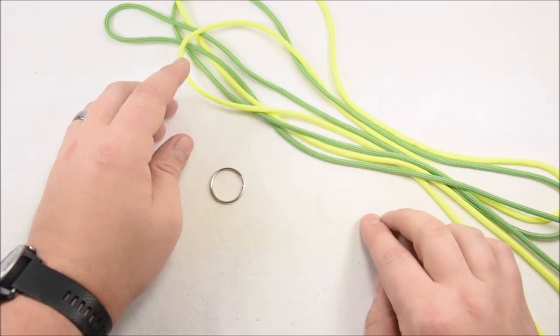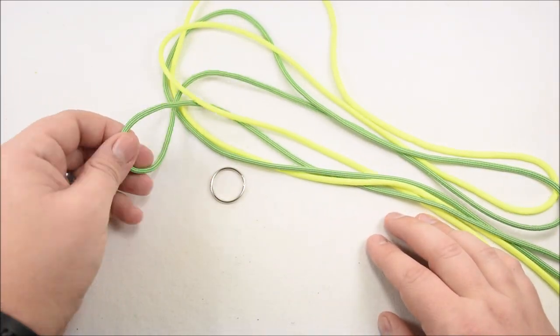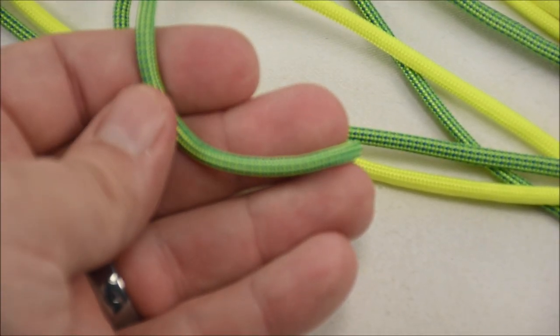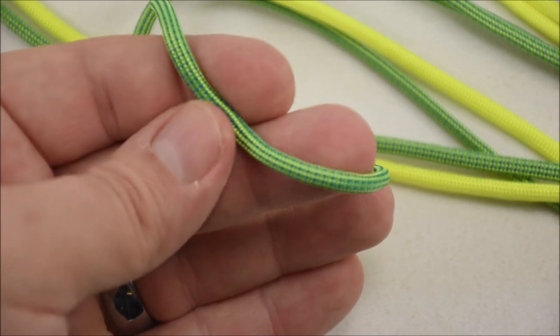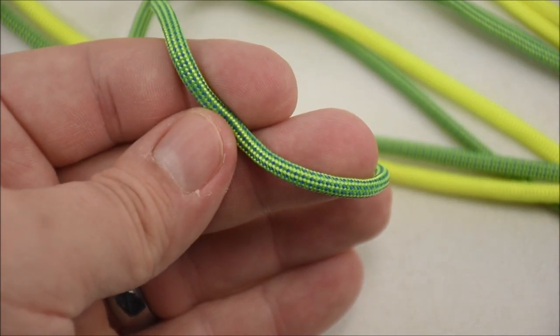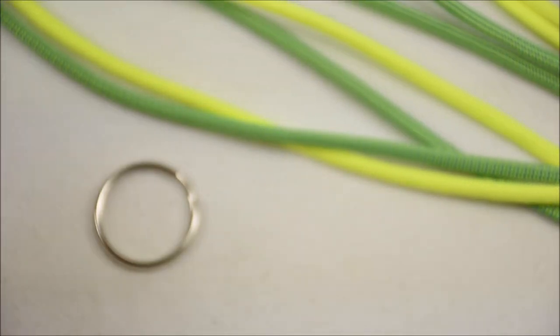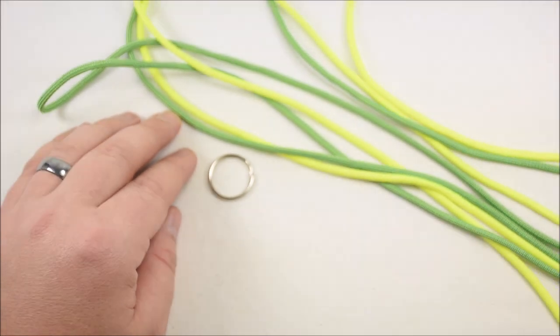But let's go ahead and get started. I have two colors here. We have neon yellow, and this is called tree frog. Very unique color here. Kind of hard to see, but there you go. I got a little bit of a look at it there. I have five feet each, so that should be plenty.